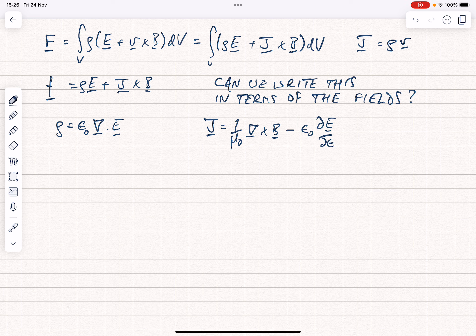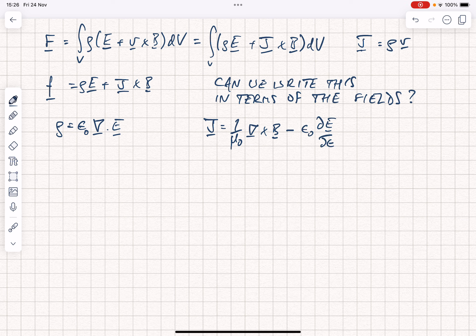When we substitute those in, we find that little f is now equal to epsilon naught div E times E plus, and then we're going to have a big bracket of 1 over mu naught curl B minus epsilon 0 dE by dt. That's all crossed with B.